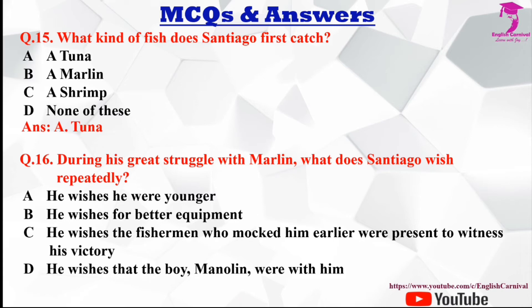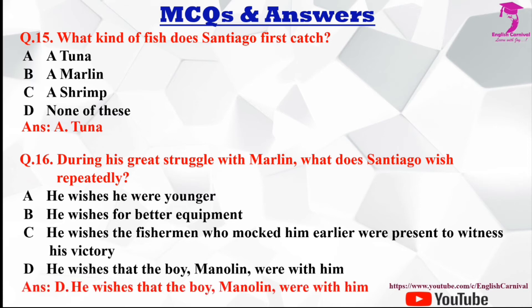Question number sixteen: During his great struggle with the marlin, what does Santiago wish repeatedly? Options are A he wishes he were younger, B he wishes for better equipment, C he wishes the fishermen who mocked him were present, and D he wishes that the boy Manolin were with him. The correct answer is D, he wishes that the boy Manolin were with him.